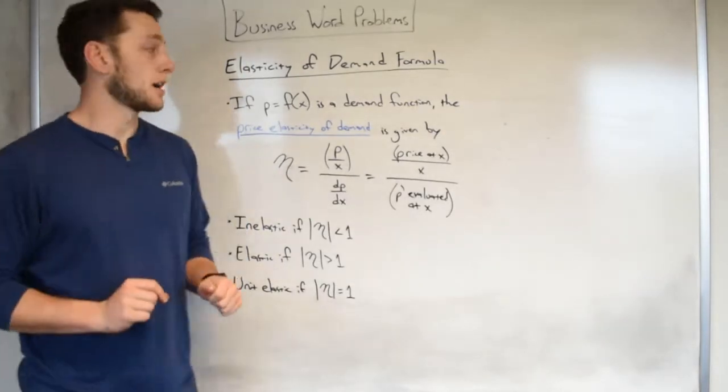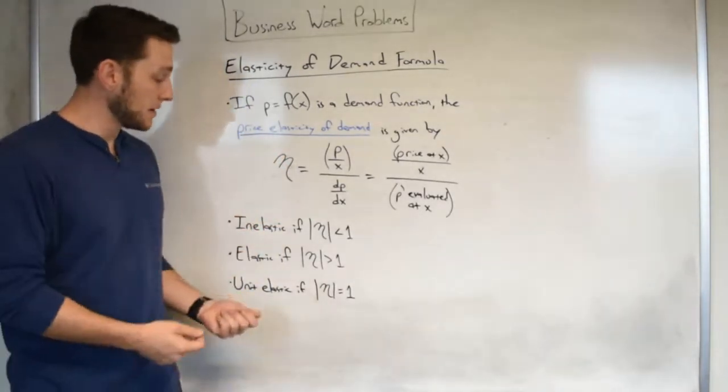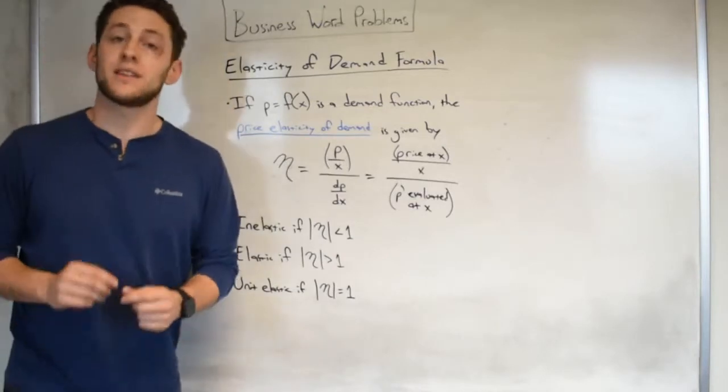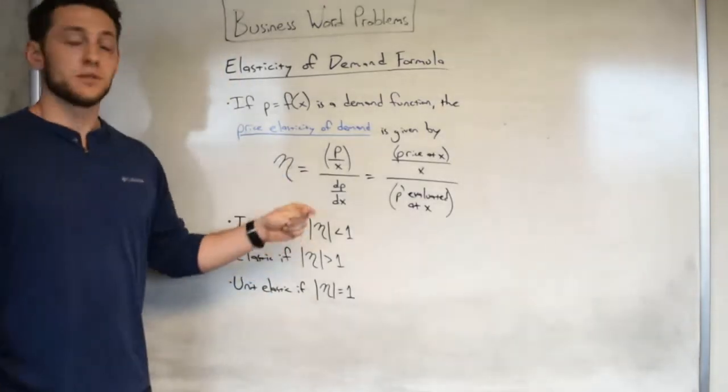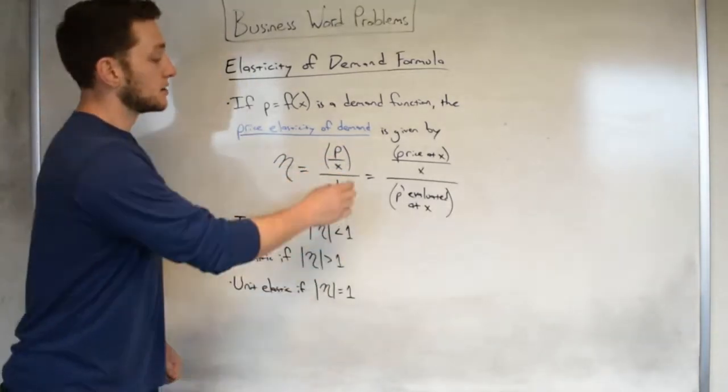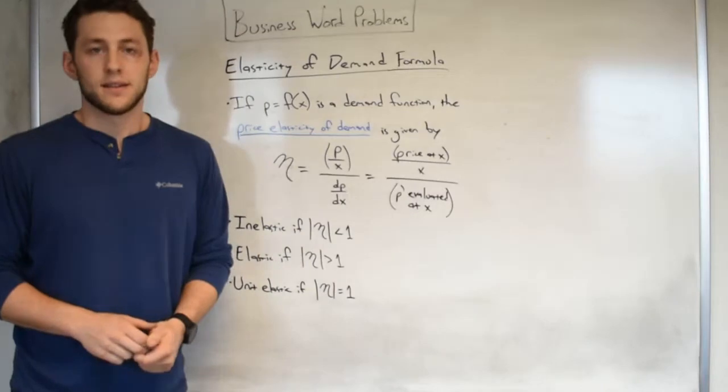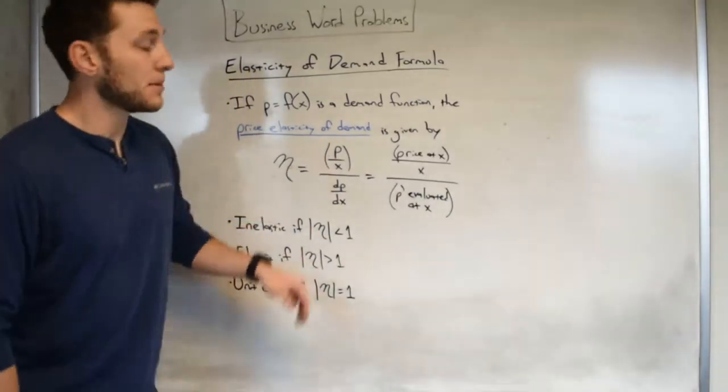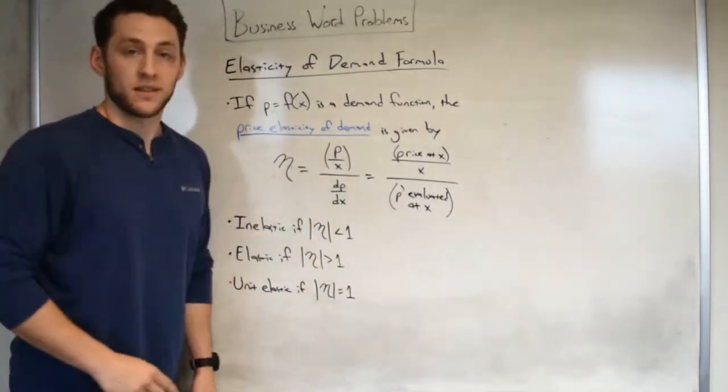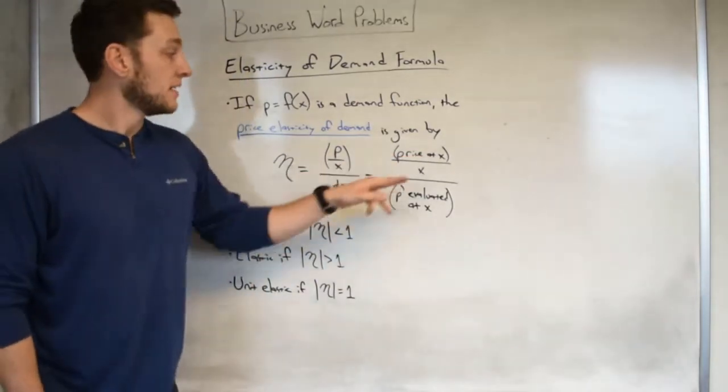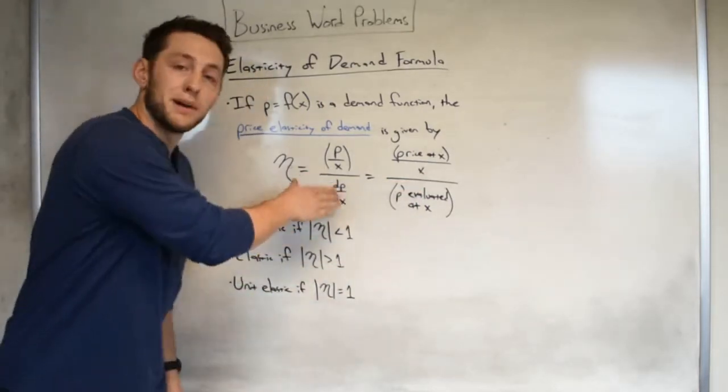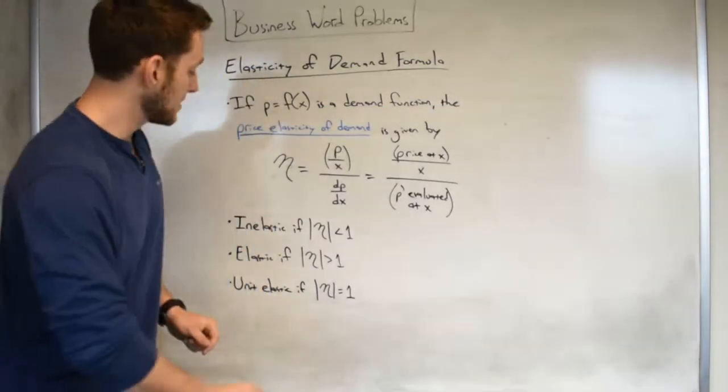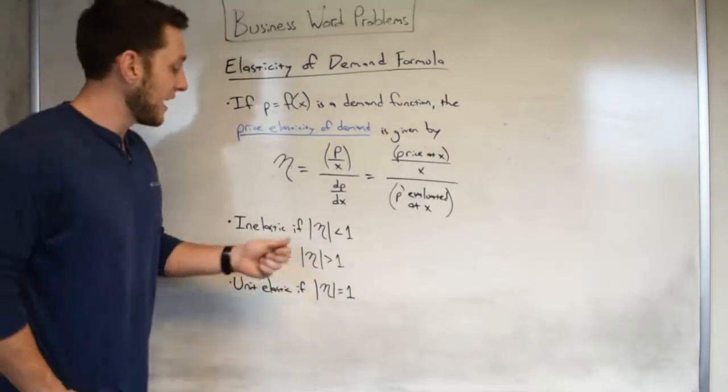One way you can think about this is by increasing the price, you might lose some customers, but at the same hand, that money that you gained from increasing the price makes up for the customers lost. We will get into the calculus for how we can describe these markets in math on the next slide. Now that we have the terminology, let's talk about how we can mathematically define and determine when a market is inelastic, elastic, or unit elastic. The price elasticity of demand is going to be given by this formula: eta is equal to the price divided by x, all divided by the derivative of the price with respect to x.